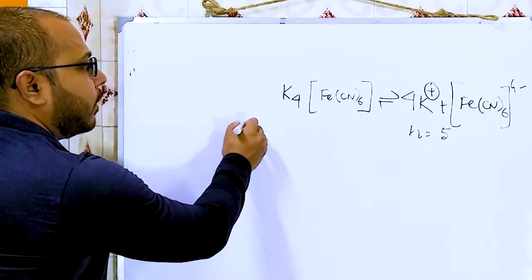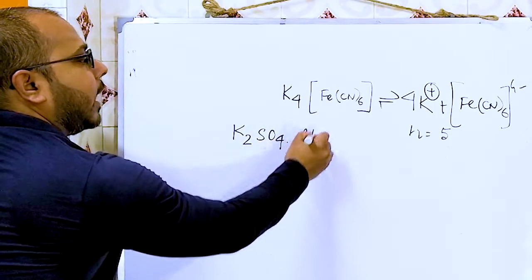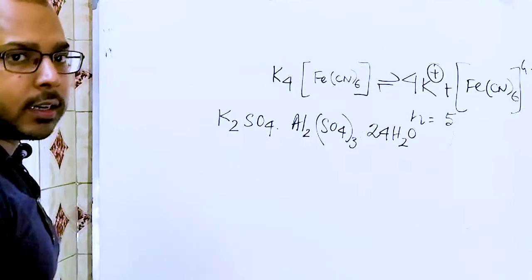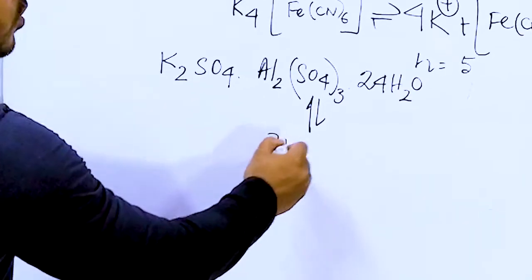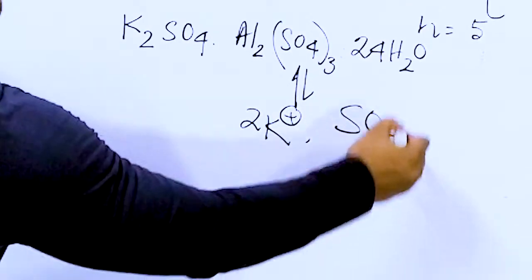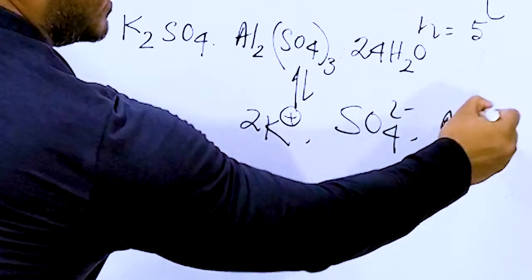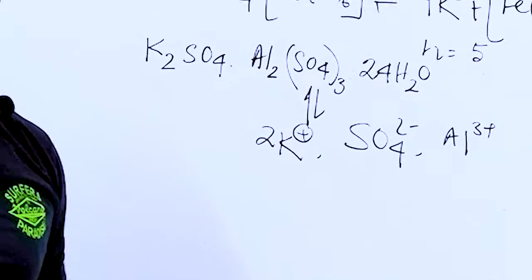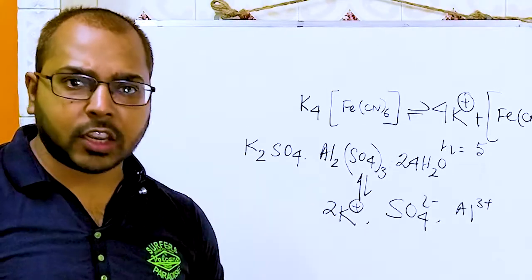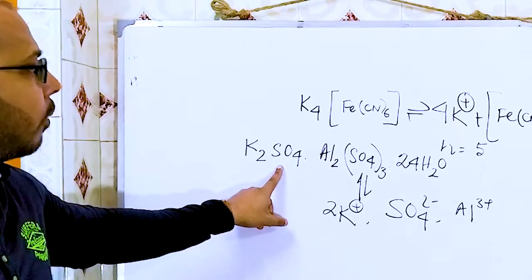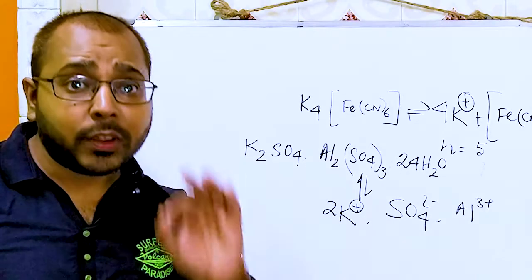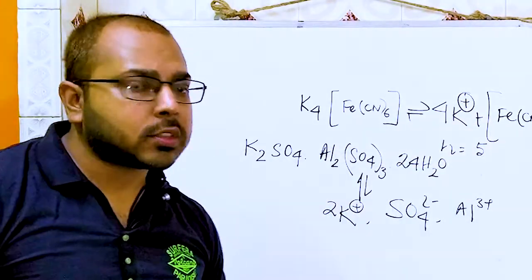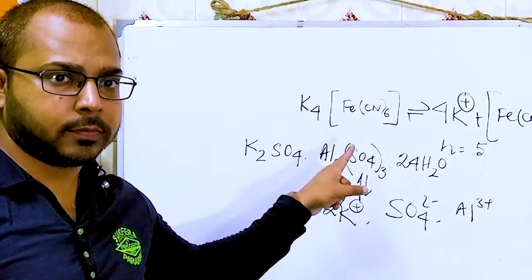But if you take the example of Al2(SO4)3·24H2O — when it will dissociate, it will give you 2K⁺, SO4²⁻, and Al³⁺ — individual ions. So it is known as a double salt. Double salt means more than one metal atom should be present and it will give individual ions in aqueous solution, but the complex portion will not dissociate in aqueous solution in case of a complex salt.